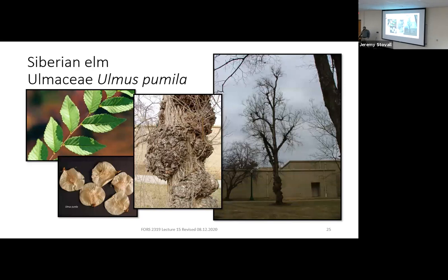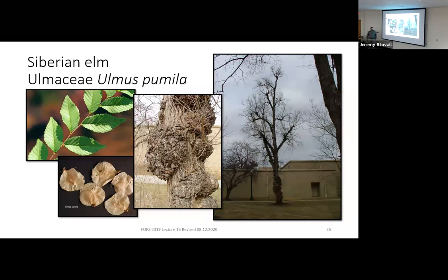That covers a few tropical hardwoods. Next, let's look at some temperate hardwood species — many of which are either ornamentals or invasive species in the United States. Starting with Siberian Elm, Ulmaceae Ulmus pumila. When you look at Siberian elm, it resembles our other elms except with tiny little leaves and slender twigs.